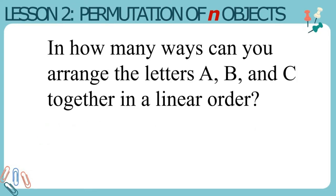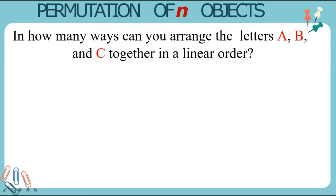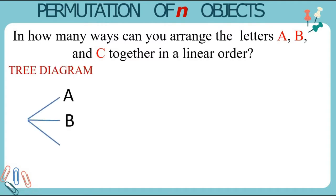Let us have this example: In how many ways can you arrange the letters A, B, and C together in a linear order? The answer is there are 6 ways. How did we get the result? Let us use the tree diagram. We can choose from A, B, or C, so we have our first order and we have 3 choices.